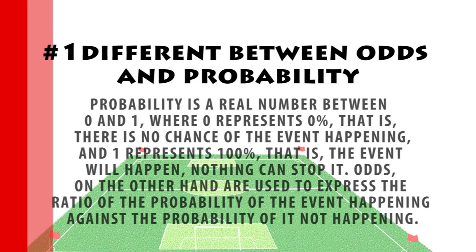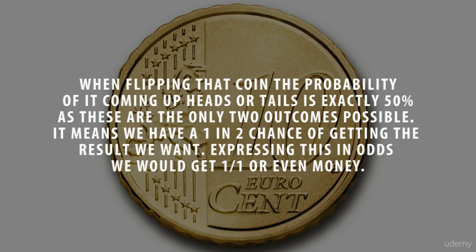It sounds a bit confusing if put like that, but let's look at a simple example to make it much clearer. Assuming an honest coin, when flipping the coin, the probability of it coming up heads or tails is exactly 50-50, and these are the only two outcomes possible. It means we have a 1 in 2 chance of getting the result that we want. When expressing this in odds, we get 1 over 1.